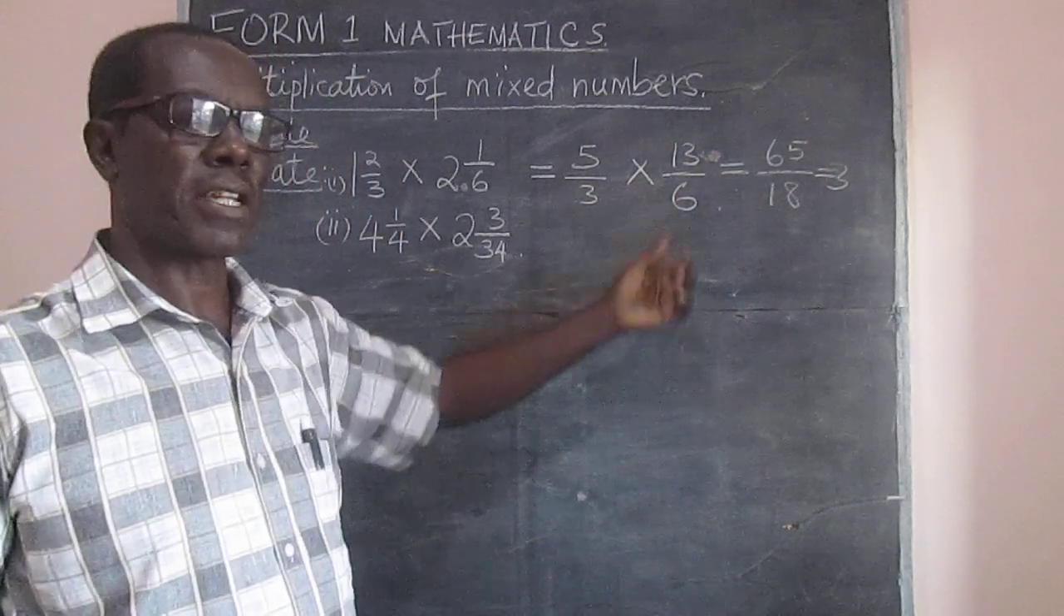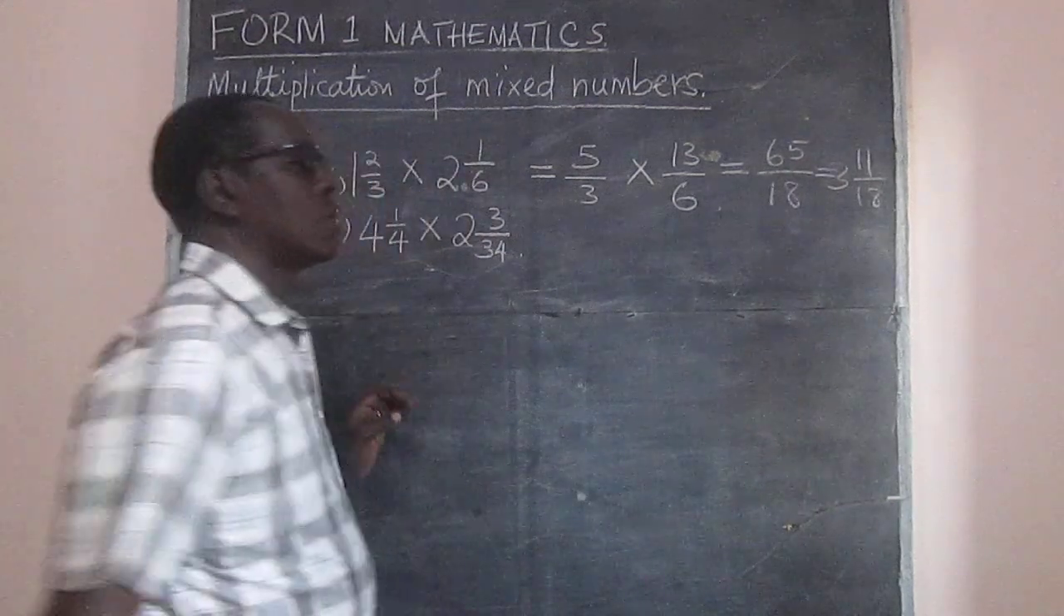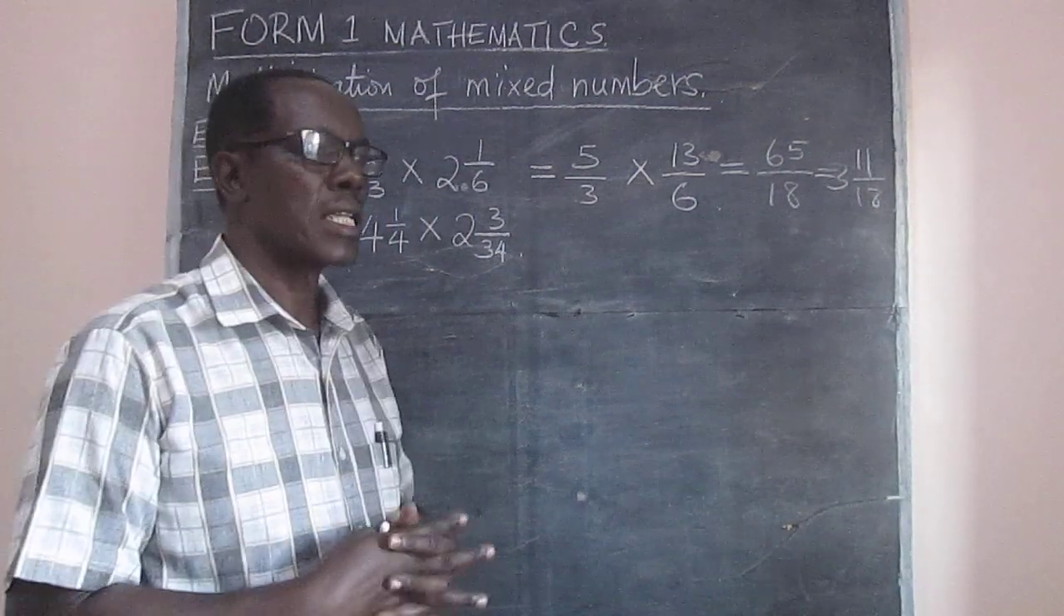And sixty-five minus fifty-four, that gives us eleven. So there is a remainder of eleven over eighteen. So it's as simple as that. That reminds us how we do this.